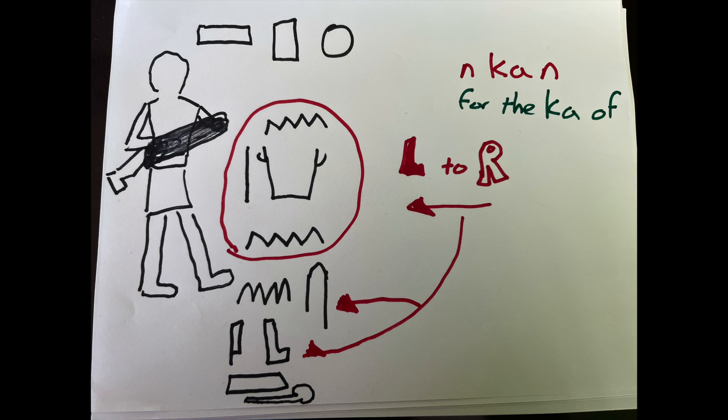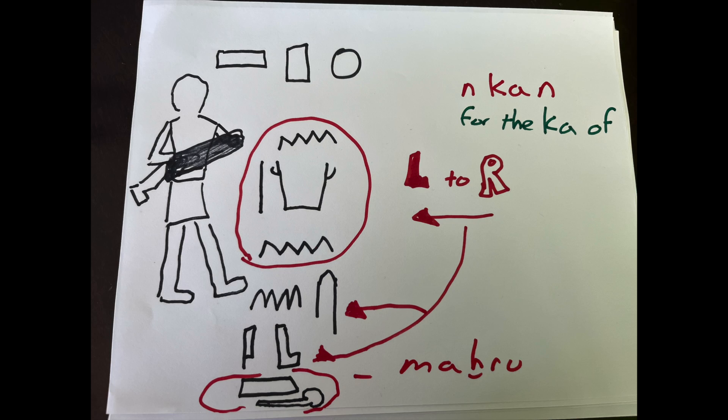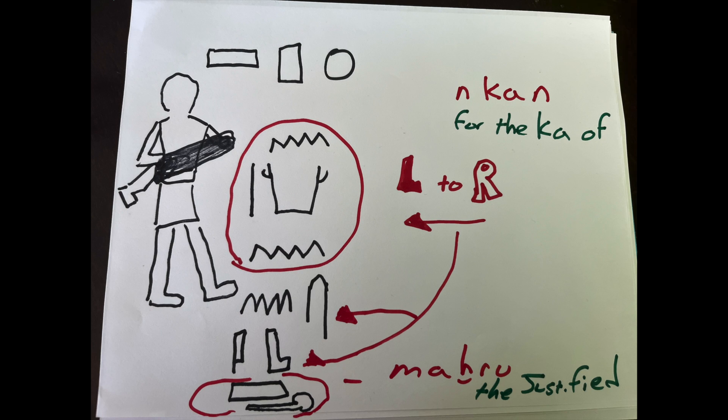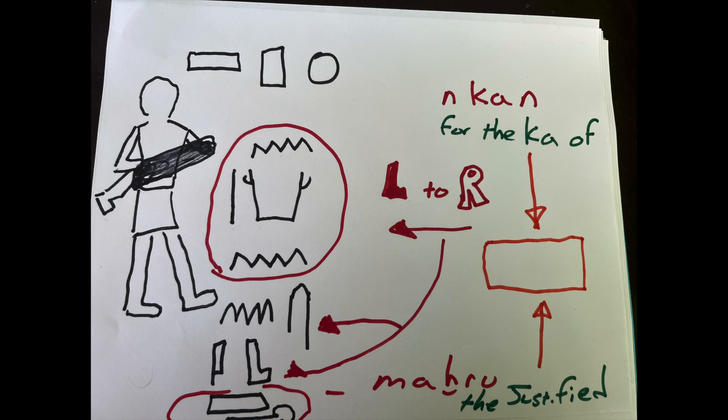You have to be careful because things like 'n ka n', you can't tell—it could be left to right or right to left. Now, let's recognize what we do know. Again, 'for the ka of' we recognize, and we recognize 'maa-kheru', the justified, or their version of 'rest in peace', 'true of voice' literally. So we've got those words. Great. But what's the word in the middle?